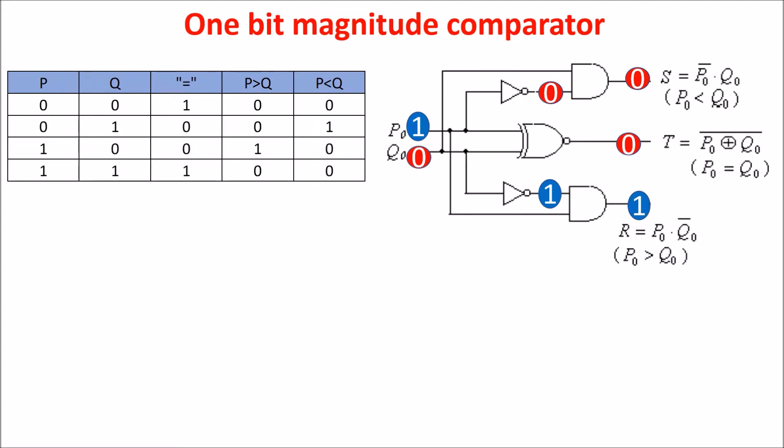So, as we wanted, only one of the output is at one and the output at one indicates the equality or the magnitude of a number in comparison with the other.